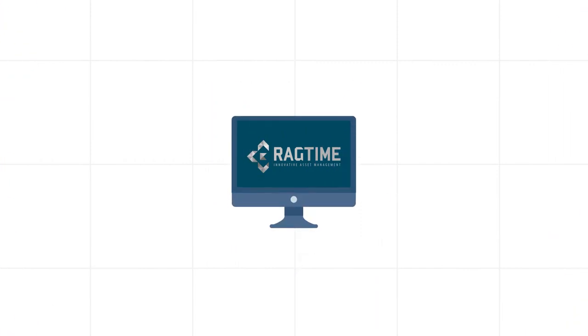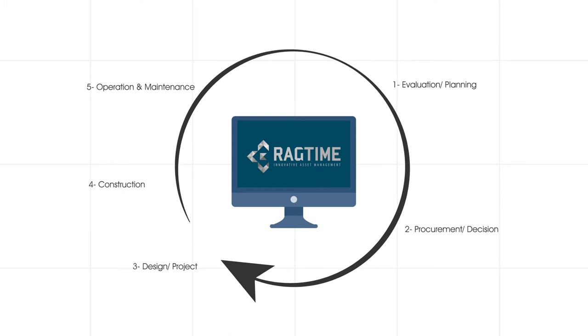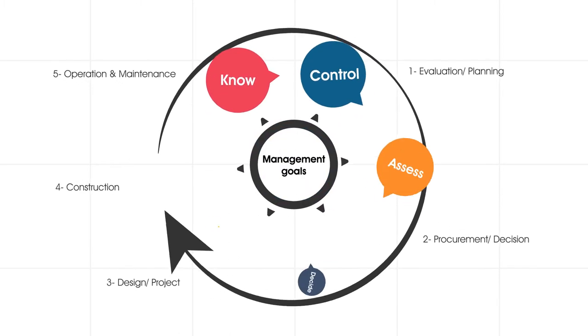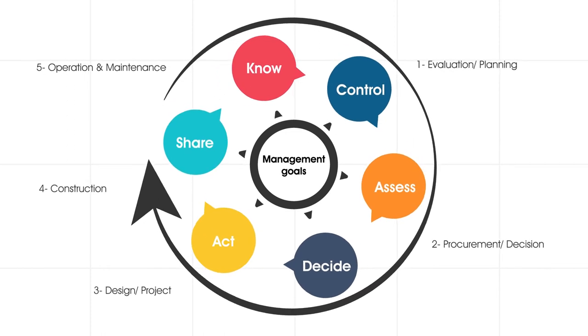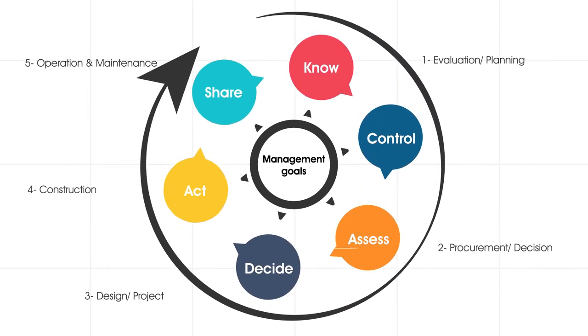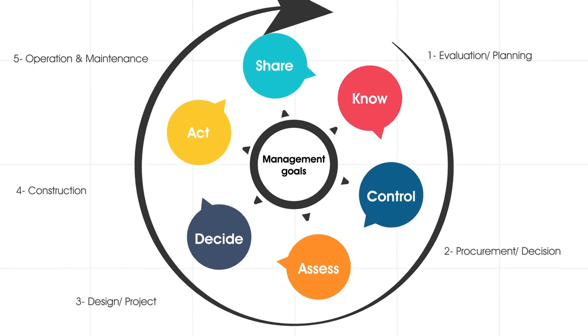RAGTIME is a software platform to develop, demonstrate and validate an innovative management approach and to lay out a whole system planning by six different points. Know, control, assess, decide, act and share.